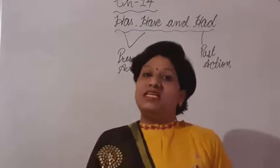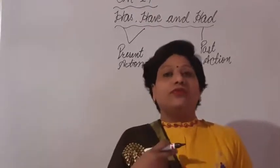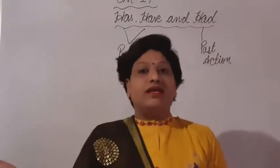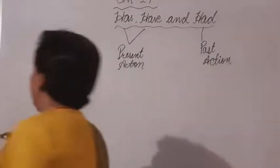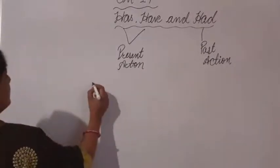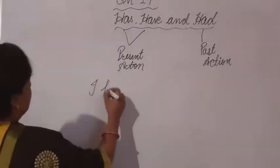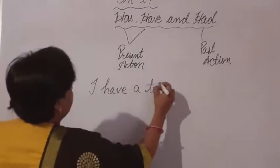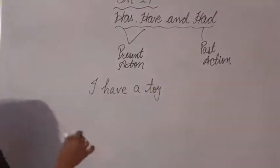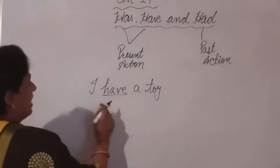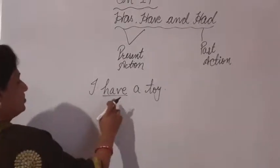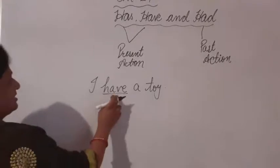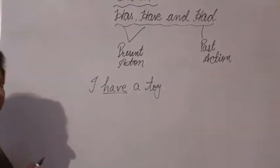For example, we can say 'I have a food,' 'I have a toy,' or 'She had a toy.' I have a toy means 'मेरे पास एक खिलौना है.' Have is used for belongingness, and this belongs to me.